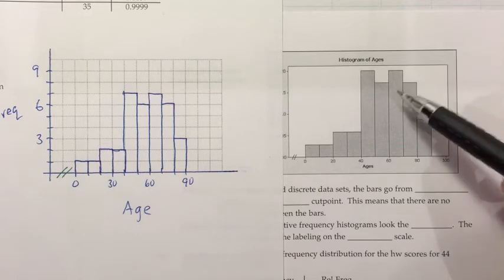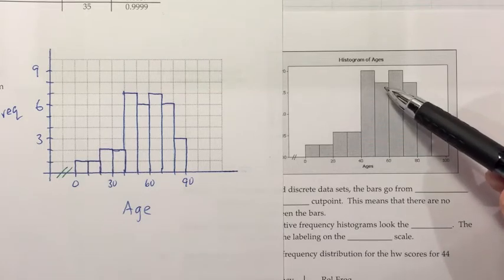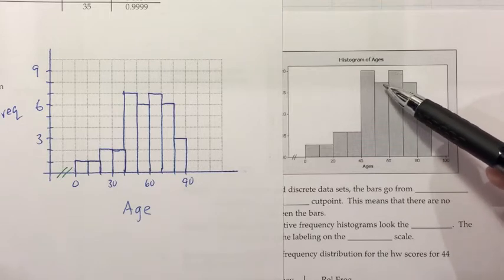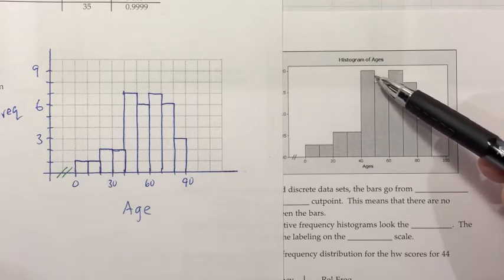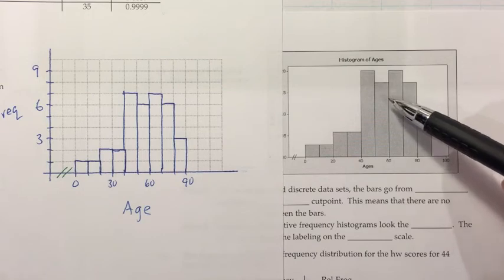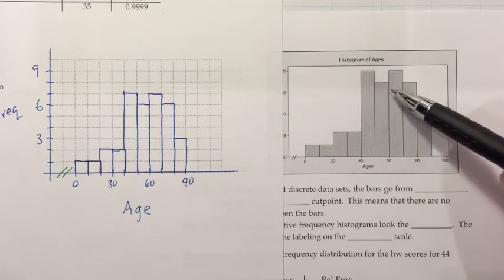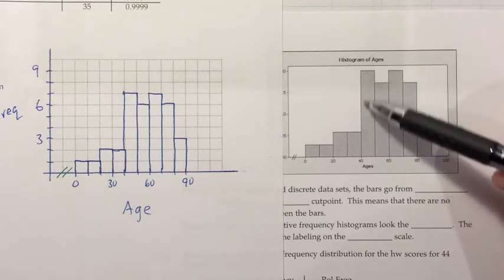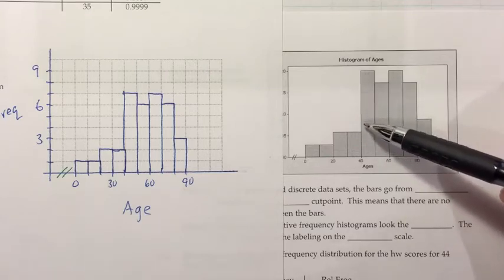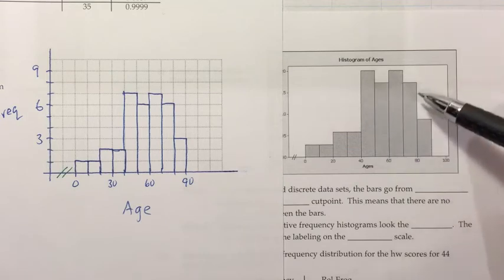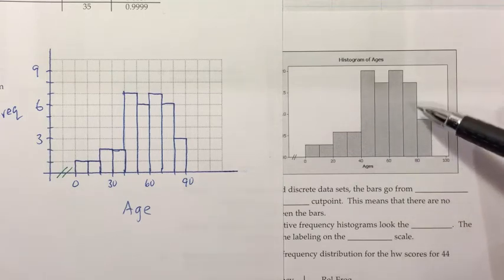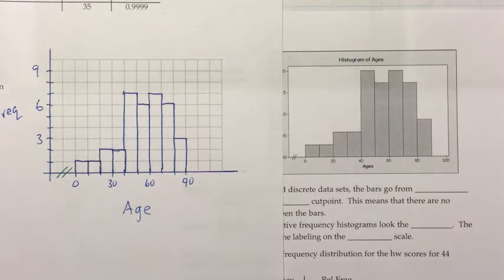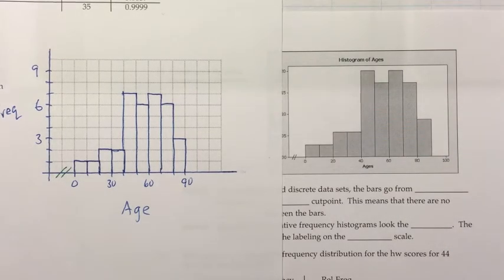One other thing worth mentioning: the small dip in the data. People sometimes think this represents patients getting better and then relapsing. When you see a small change in a graph from a random sample, you should probably attribute it to the randomness of the sample. When you see a big change, think about what caused it. Little bumps are probably just random variation from the random selection of the dataset.